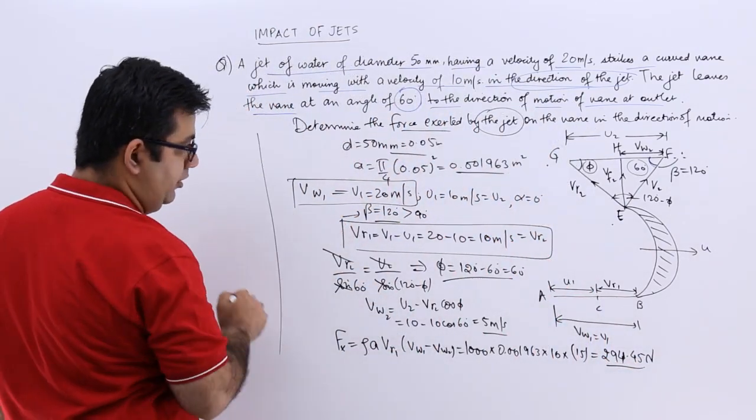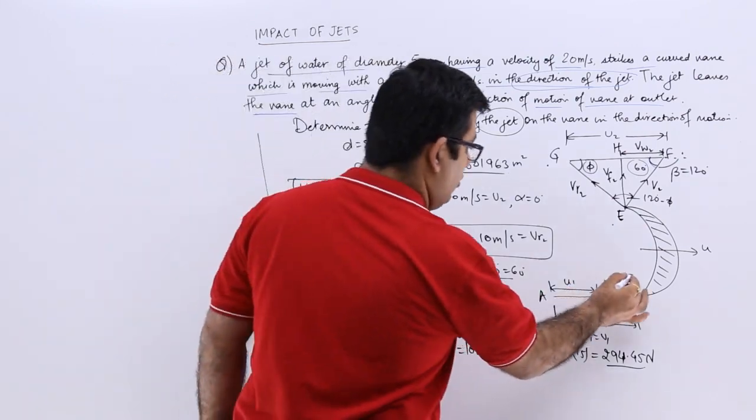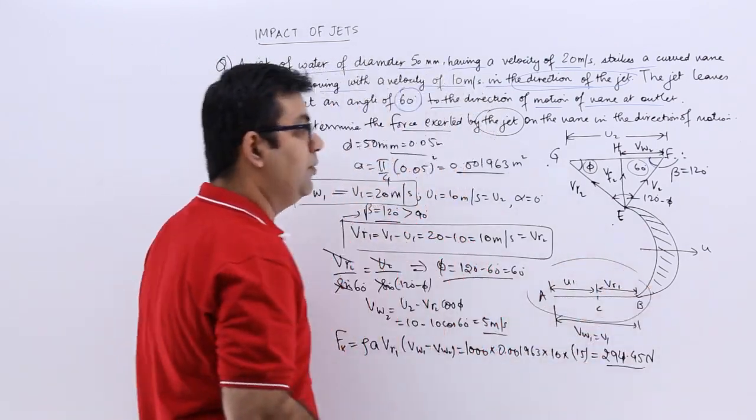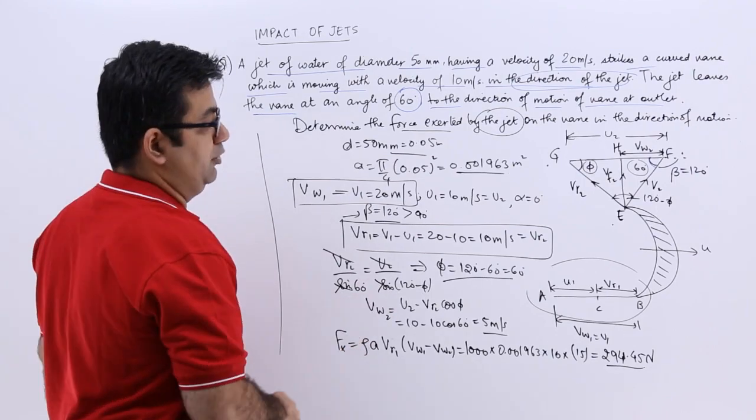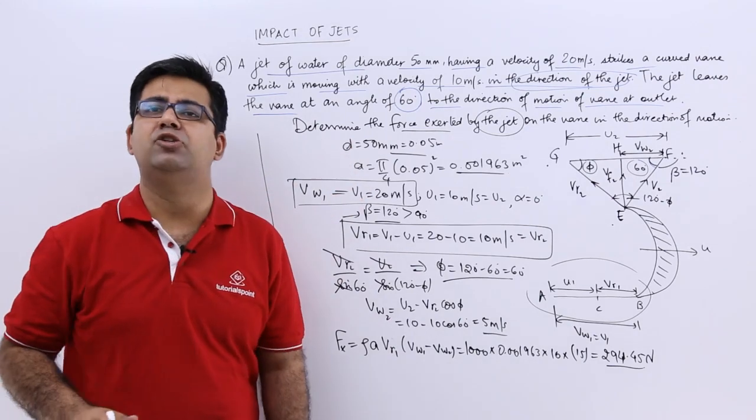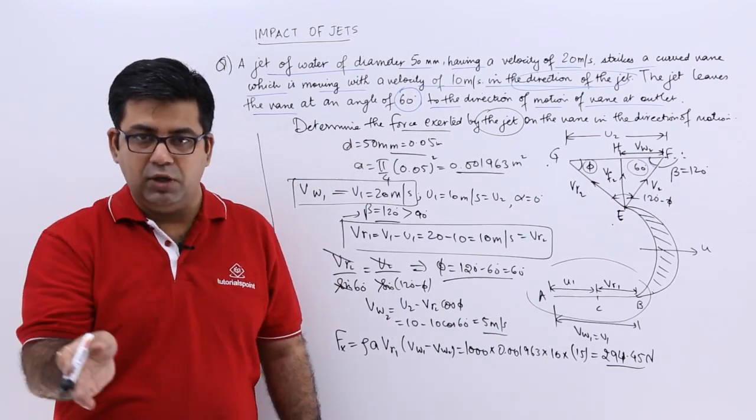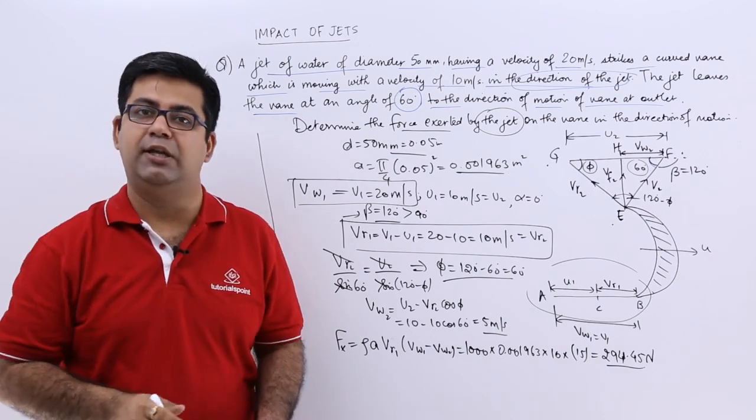So this is how you solve a question. Read the question very carefully because if you don't read it, you are going to make a mistake in drawing the inlet velocity triangle. So I hope you got this. Now, after this, let's move on to the next topic and talk about a series of vanes put on a wheel. Let's talk about that in the next video.